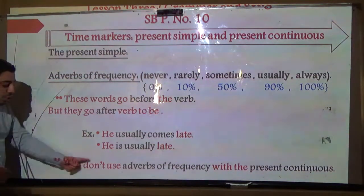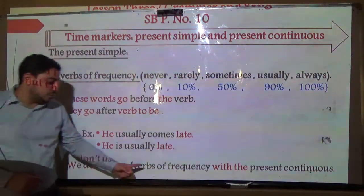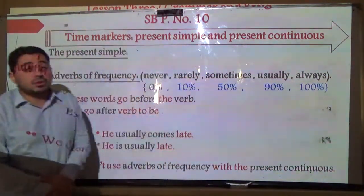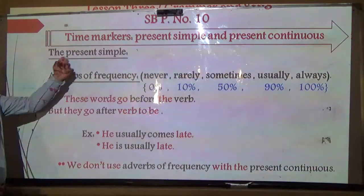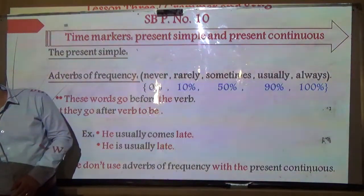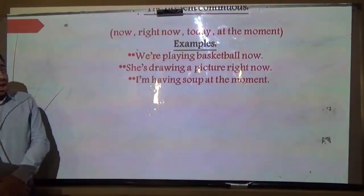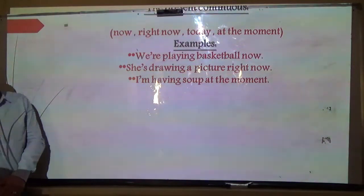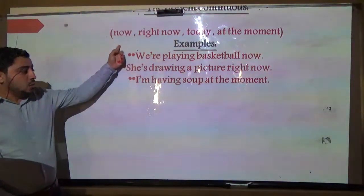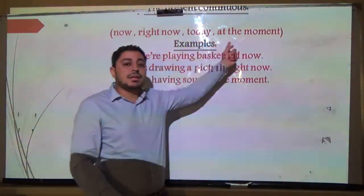Pay attention: we don't use adverbs of frequency with the present continuous — they are only used with the present simple. Now, the time markers of the present continuous are: now, right now, today, and at the moment.